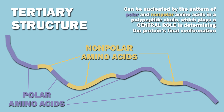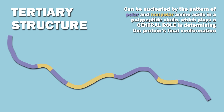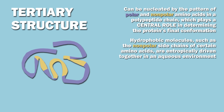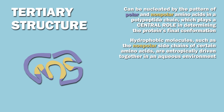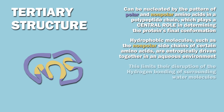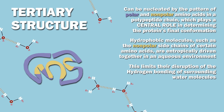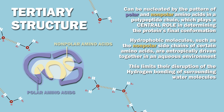Tertiary structure formation can be nucleated by the pattern of polar and nonpolar amino acids in a polypeptide chain, which plays a central role in determining the protein's final conformation. This is because hydrophobic molecules, such as the nonpolar side chains of certain amino acids, are entropically driven together in an aqueous environment, which limits their disruption of the hydrogen bonding of surrounding water molecules. As a result, nonpolar amino acids tend to be found predominantly in the interior of proteins, while polar amino acids face the outside, forming hydrogen bonds with one another and with the water molecules around the protein. Those polar amino acids that are on the inside of the protein bond with one another or with the polypeptide backbone.